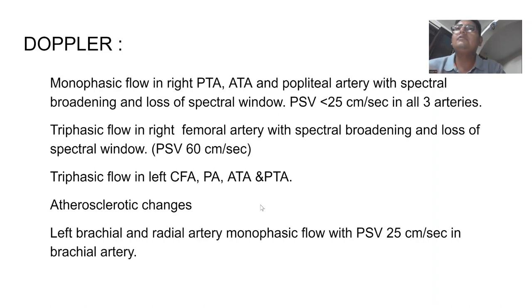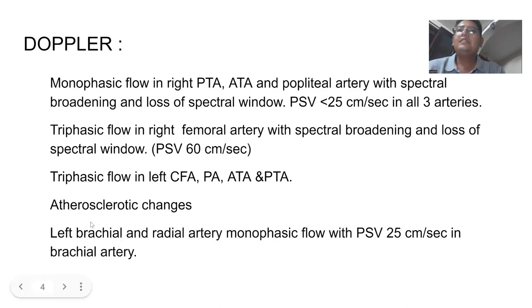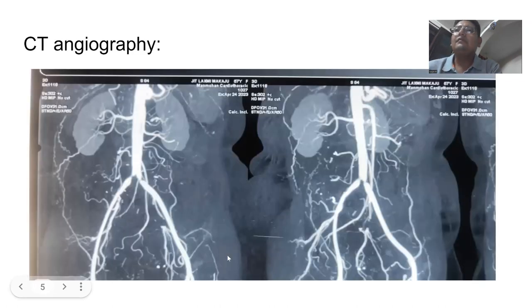On ultrasound in OPD, monophasic flow was found in the right posterior tibial artery, anterior tibial artery, and popliteal artery, with triphasic flow in the right femoral artery. There was triphasic flow in the left common femoral, popliteal artery, and distal arteries with approximately normal changes. In the left hand brachial and radial artery, the flow was monophasic.